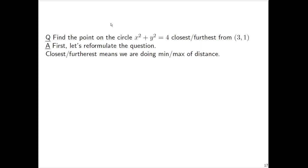Closest/furthest means we're doing min/max of distance. So a point on the circle, take a generic point (x,y), and the distance between that point on the circle and the point (3,1) is given by the distance formula d = √((x-3)² + (y-1)²).